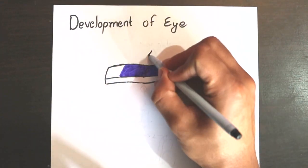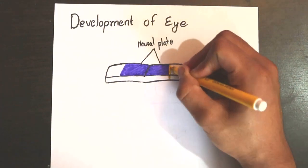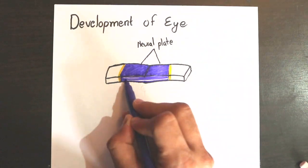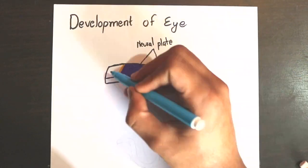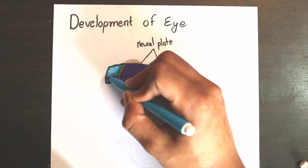The notochord secretes growth factors which stimulate the differentiation of the overlying ectoderm into neural ectoderm, forming a thickened structure known as the neural plate.